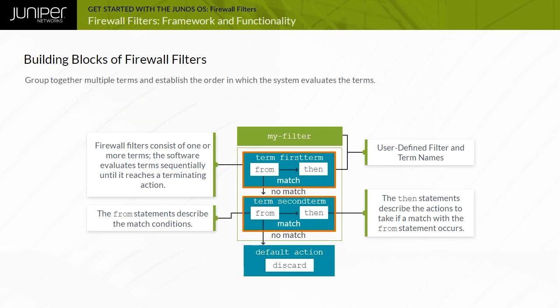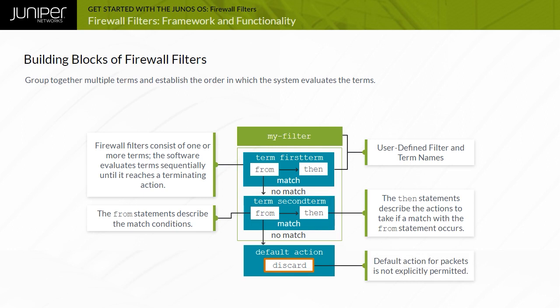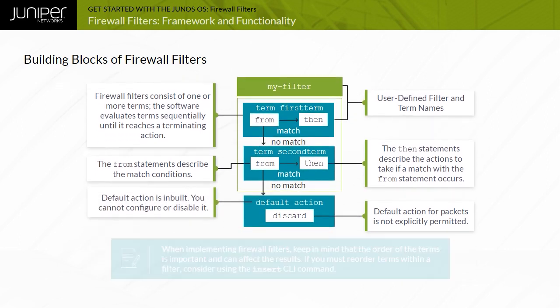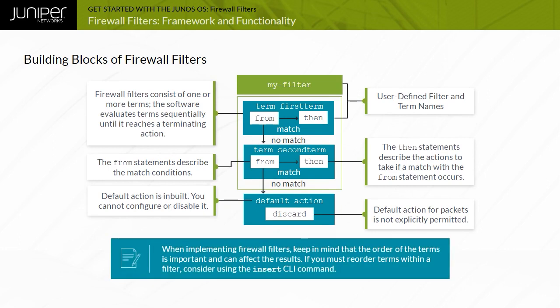You use a filter to group multiple terms and establish the order in which the system evaluates them. Junos firewall filters require at least one term and always include an invisible default term that discards all packets not explicitly permitted. The default action is inbuilt and cannot be configured or disabled. The order of terms is important and can affect results.